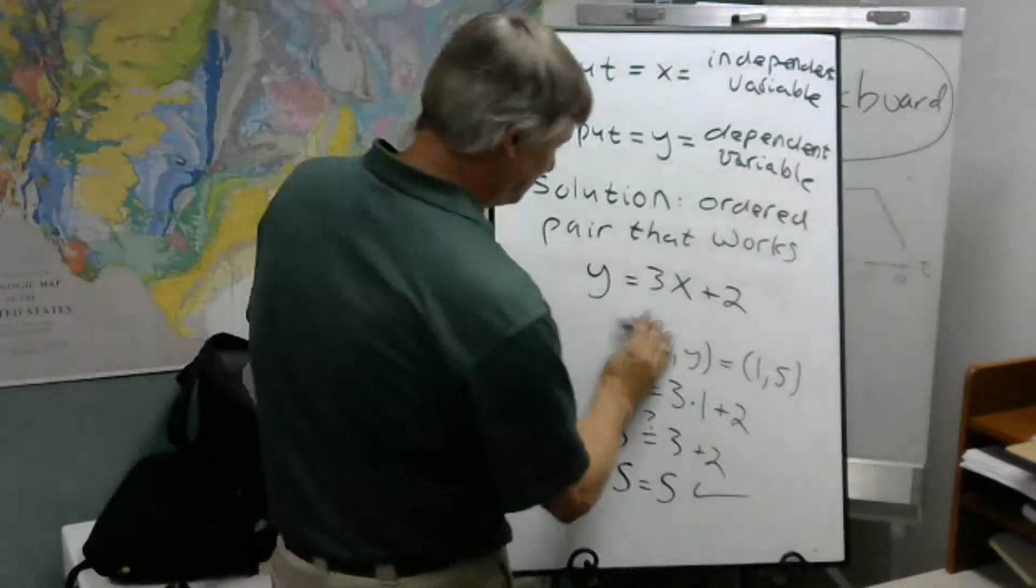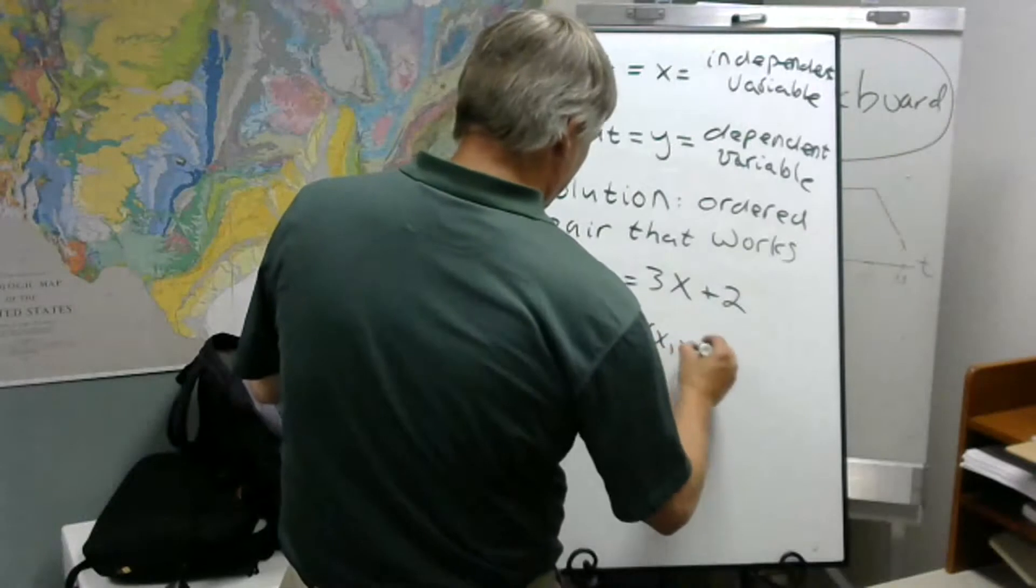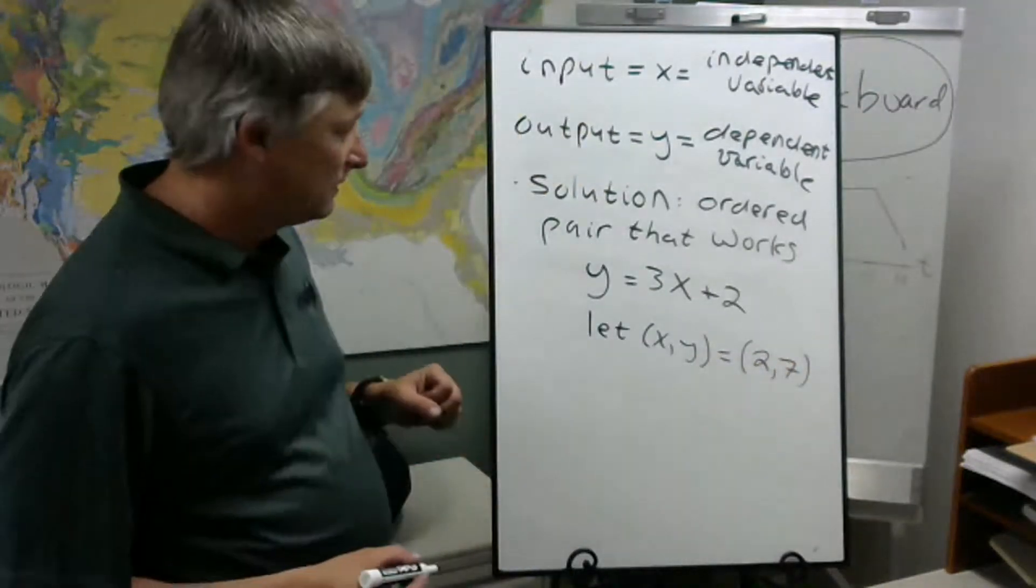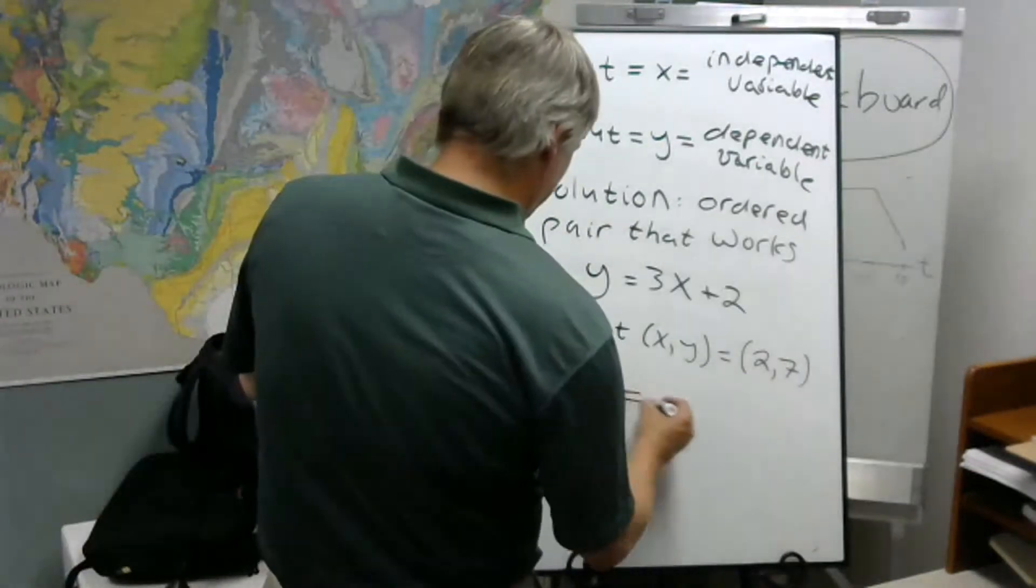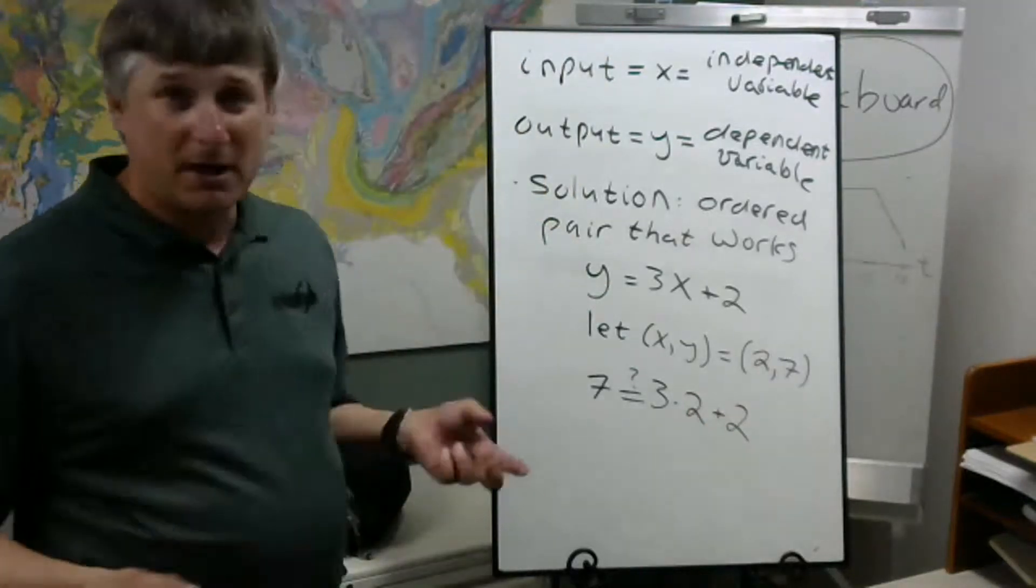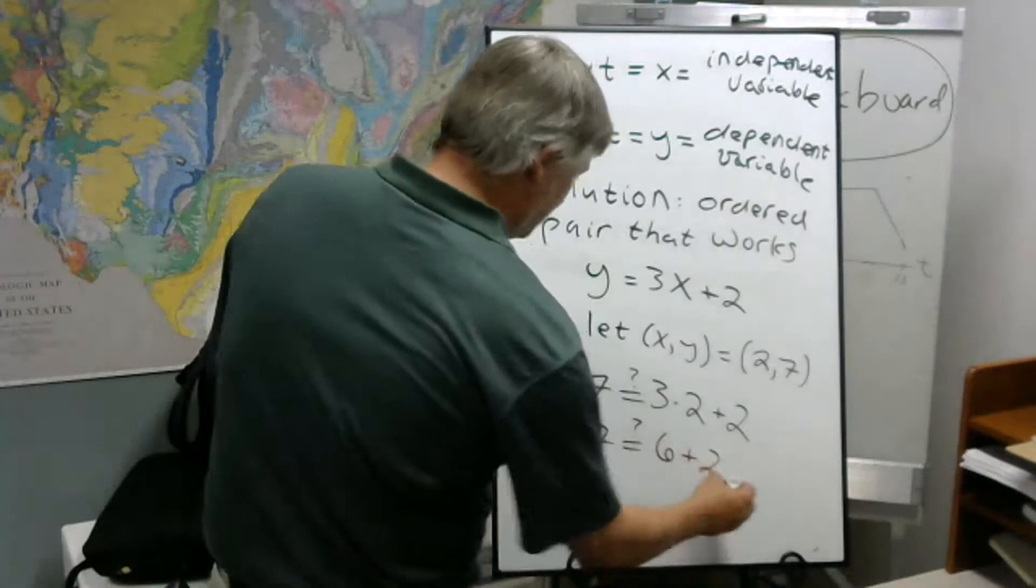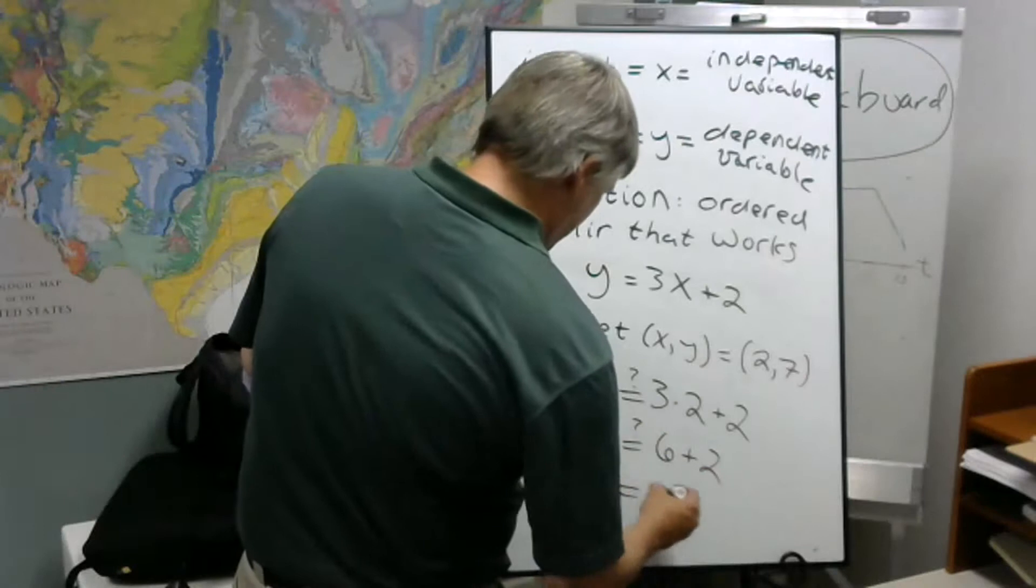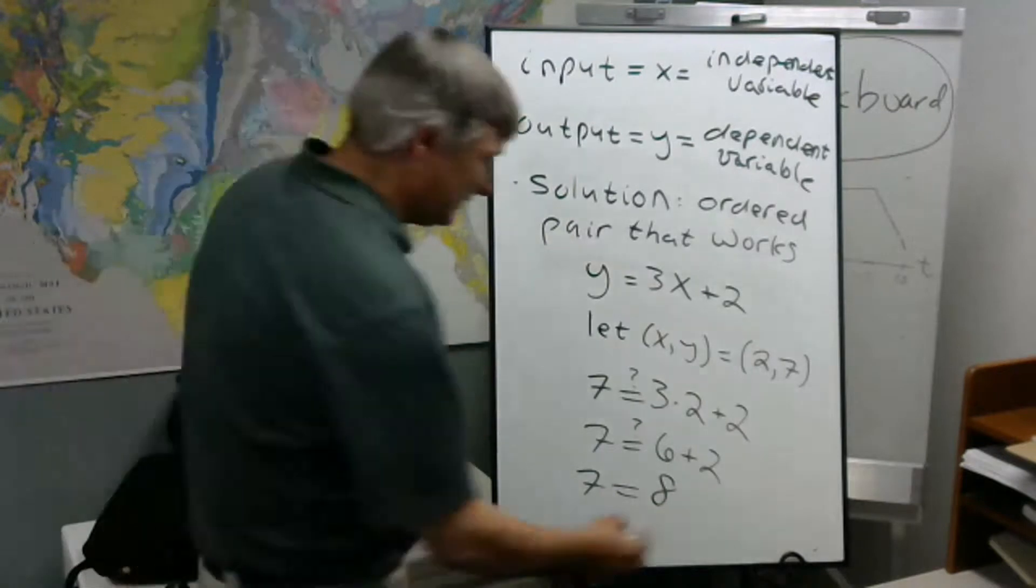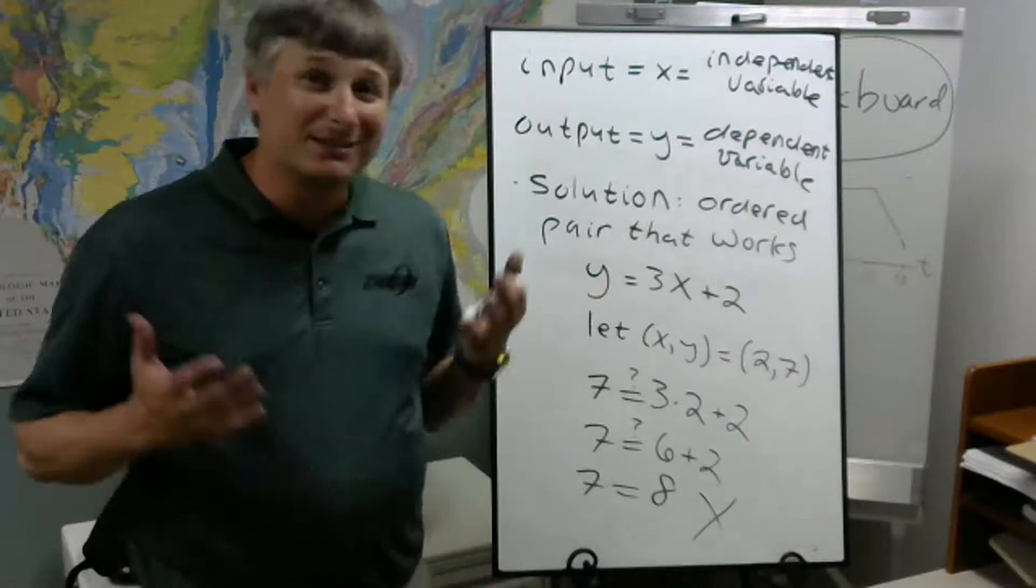Let's try another one. Is this going to be a solution? Well, let's find out. Is 7 equal to 3 times 2 plus 2? Well, is 7 equal to 6 plus 2? 6 plus 2 is 8. Is that correct? Not true. This is false. So what this means is that 2 comma 7 is not a solution to this equation. It doesn't work.